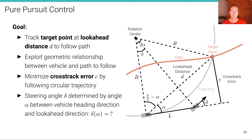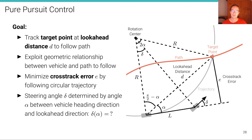The question is how we can set the steering angle delta. The steering angle is determined by the angle alpha. We want to derive a relationship that relates alpha to delta. Alpha is the angle between the vehicle heading direction and the look-ahead direction — the dashed line. We can measure alpha, and the question is: what function delta(alpha) should we use to move the vehicle along that circular trajectory?